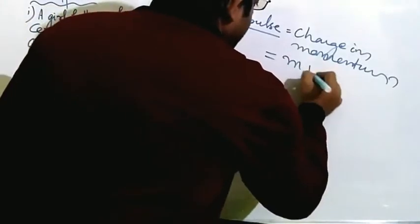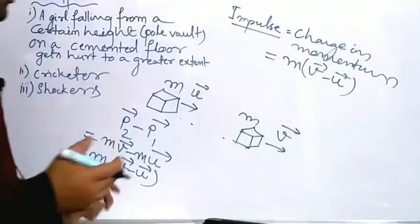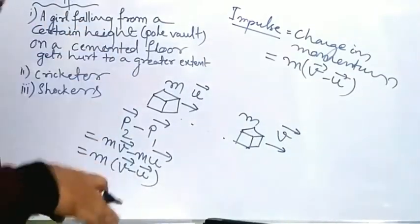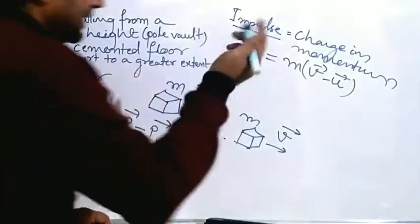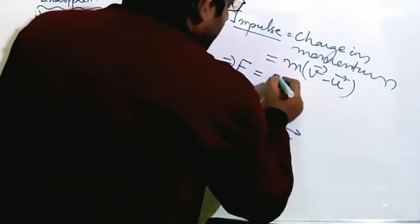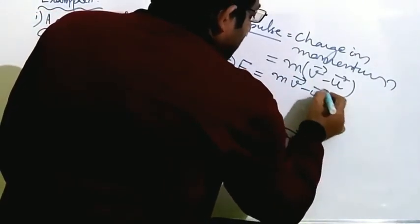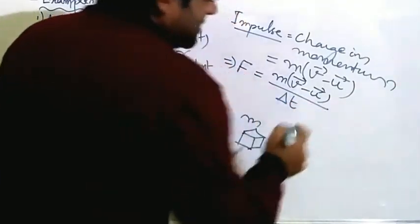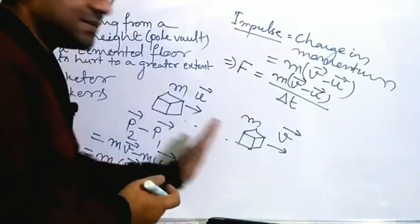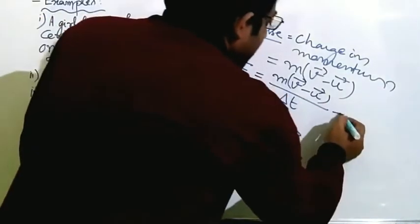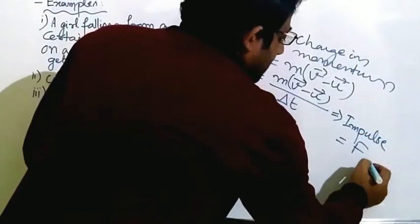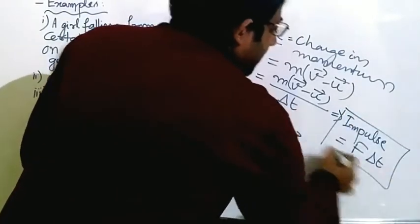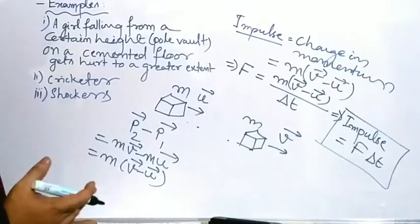So impulse is equal to change in momentum, which we can write as m(v minus u). Now, force is the rate of change of momentum — at what rate is this change happening? Let us say this change happens in a very small time delta t. So force equals m(v minus u) divided by delta t. This implies that impulse equals force multiplied by delta t — that is, force multiplied by the time of contact is impulse.